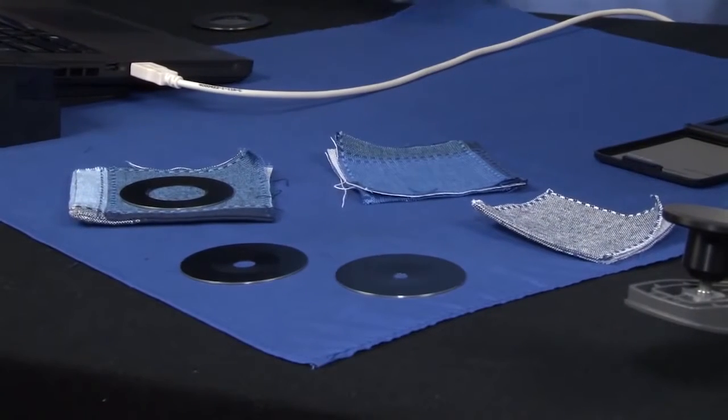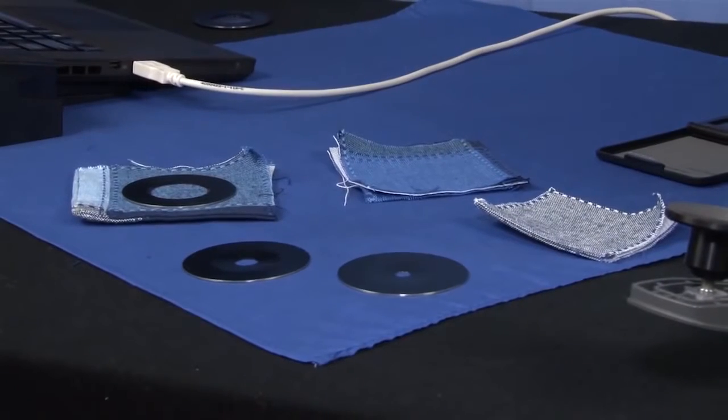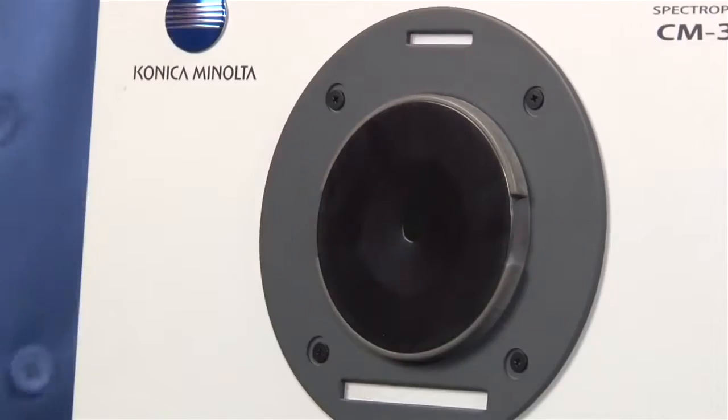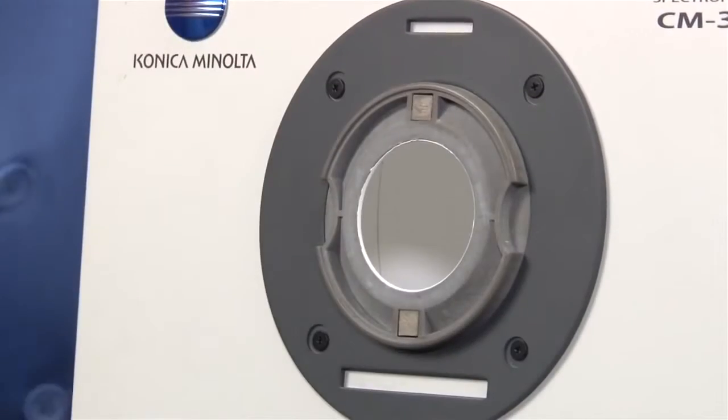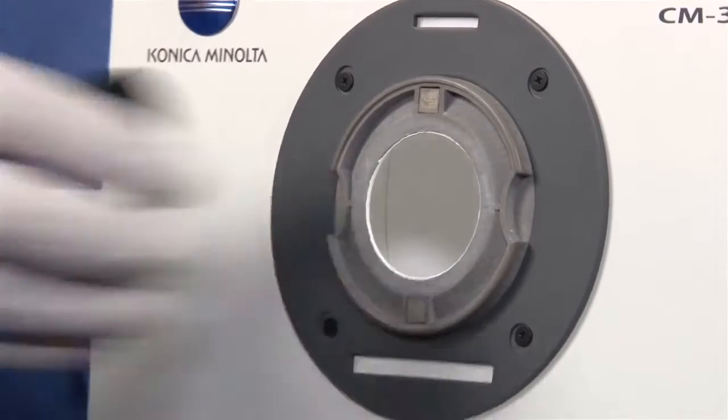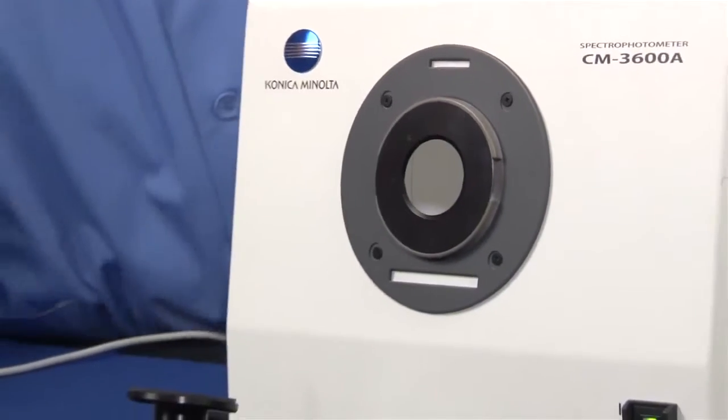The CM3600A is equipped with three different apertures, with a measurement area of four millimeters, eight millimeters, and 25.4 millimeters, to perfectly match any sample size.